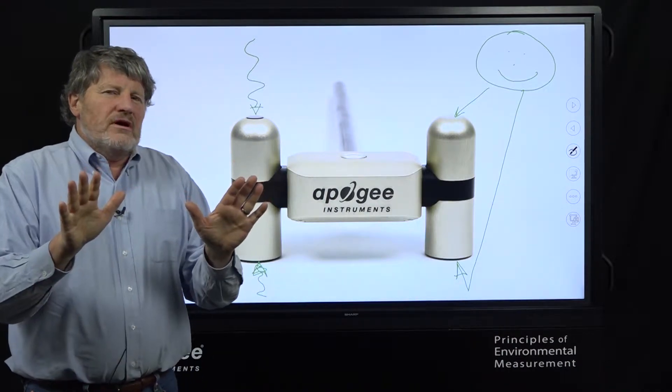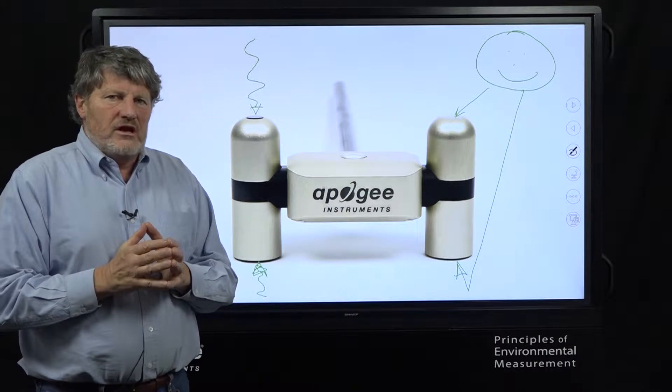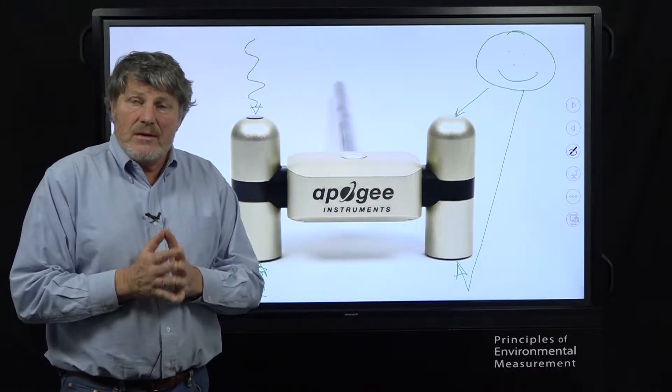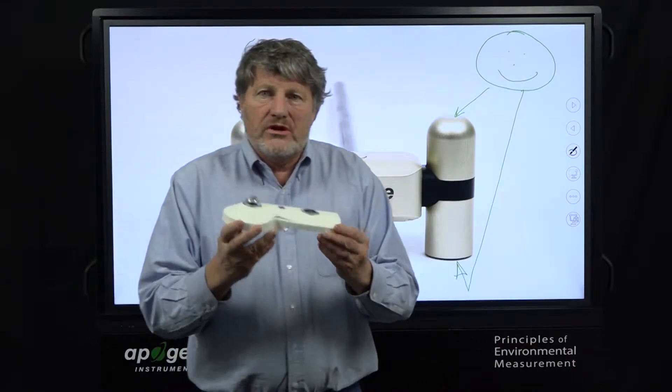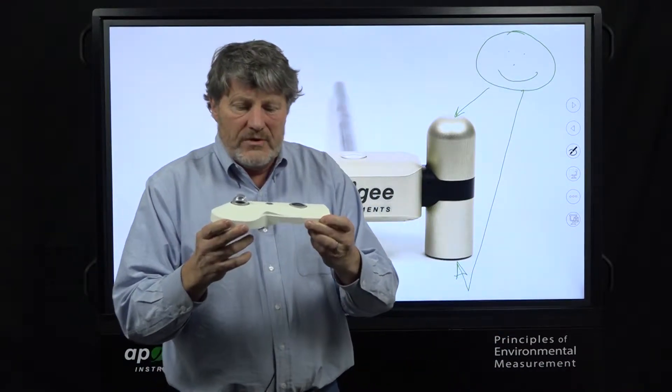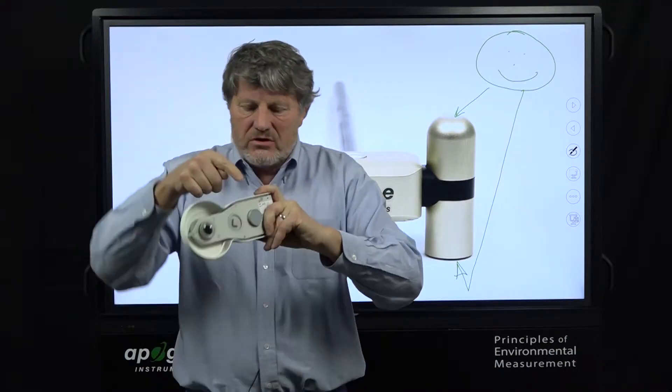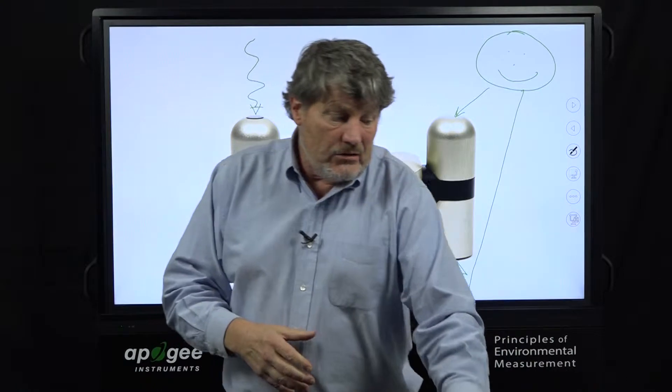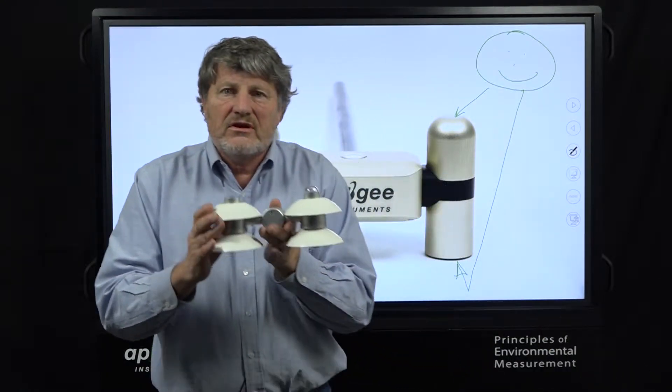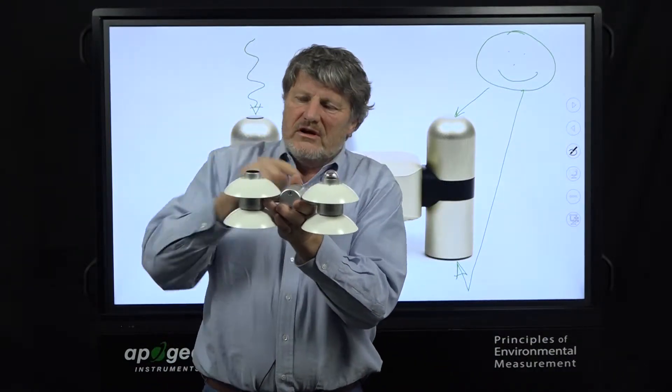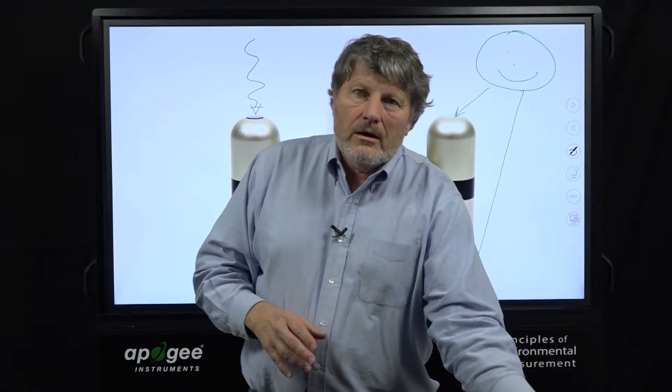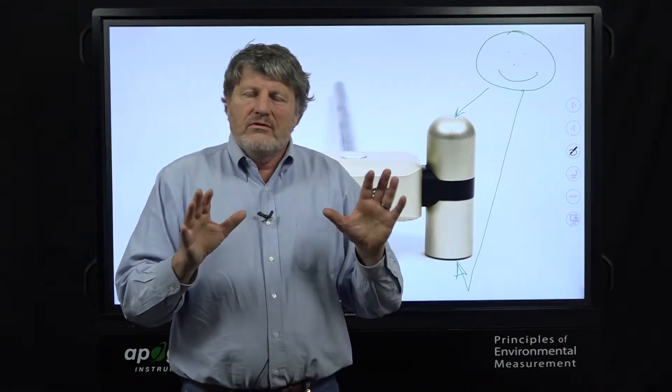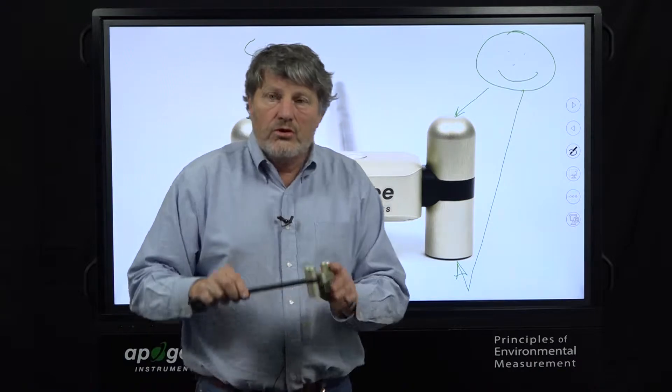Let's take a look at the state-of-the-art for net radiation and this is exemplified by two instruments. The first one is the Kipp and Zonen CNR4. Now it has the same component shortwave in and out, longwave in and out, and the Huxaflux NR01 shortwave in and out, longwave in and out. These instruments are bigger, heavier, and more expensive than the newer Apogee net radiometer.